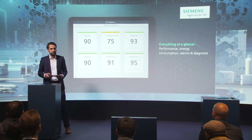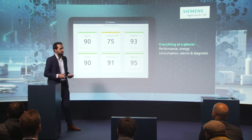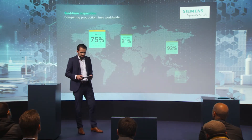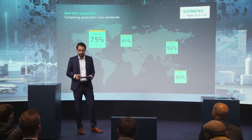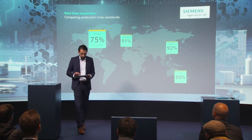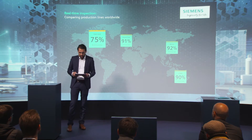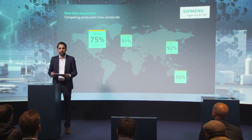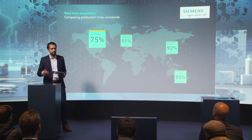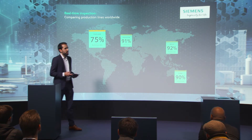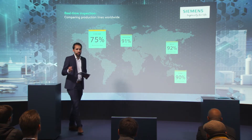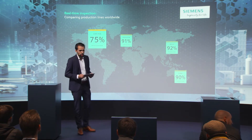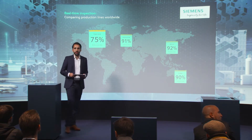But what about the other plants worldwide? How does it look there? Sydney — fine. Beijing — fine. Birmingham — fine. I see everything. Why is there a problem in Chicago?